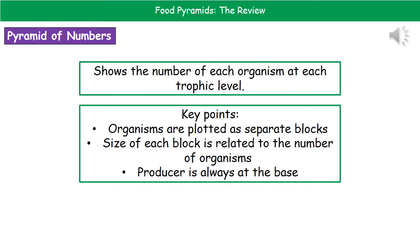A few key points to remember here. First, organisms are plotted as separate blocks. Second, the size of the block is related to the number of organisms present. And the third one is that the producer is always at the base.